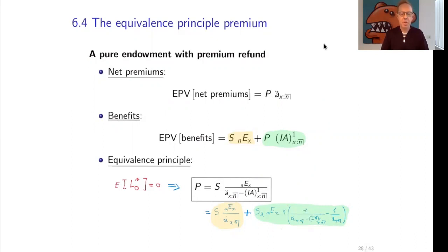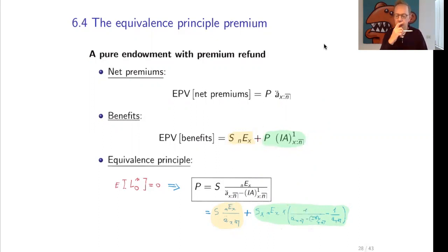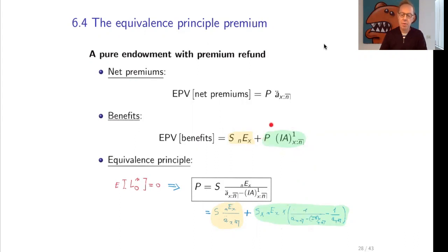The benefits of the pure endowment with premium refund consist of a pure endowment, s times E_{xn}, so an amount of s which is paid in case the insured is still alive at time n, plus a premium refund. The premium refund is: if the insured dies in the first year, there is a refund of the premium p; if the insured dies in the second year, two premiums are paid back; and so on. So the premium refund is in fact a life insurance contract with a variable insured amount equal to the number of premiums paid so far.